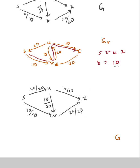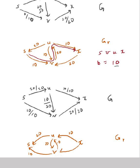Now let's compute the residual graph for this updated flow. From S, I can undo 20 to U and undo 10 to V. From U to T, I can undo 10. From U to V, I can push forward 20. From V to U, I can undo 10. From V to T, I can undo 20. Looking for an augmenting path from S to T — there is none. Since there's no S to T path in the residual graph, I am done.